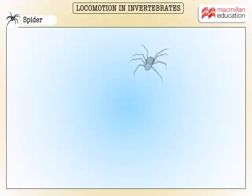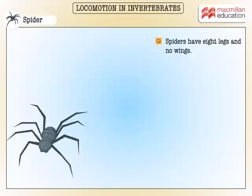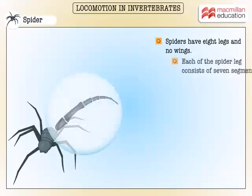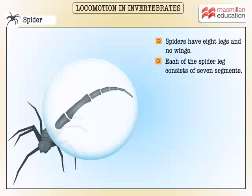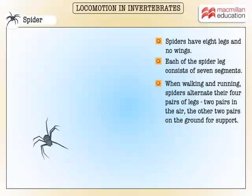Unlike insects, spiders have eight legs and no wings. Each spider leg consists of seven segments. When walking and running, spiders alternate their four pairs of legs. The special hair at the end of their legs have microscopic feet that allow them to grip onto horizontal and vertical surfaces.